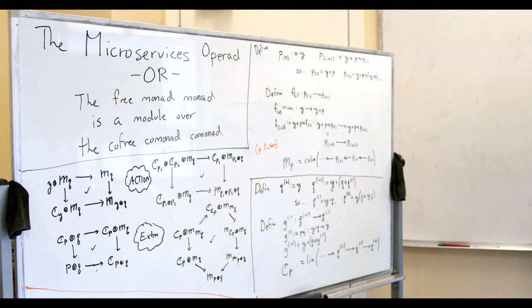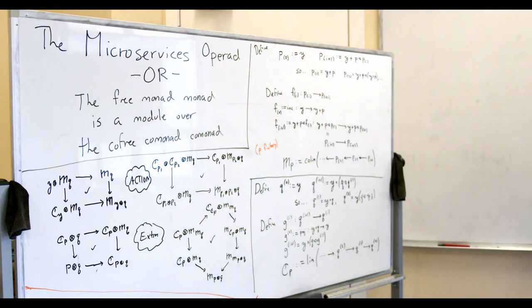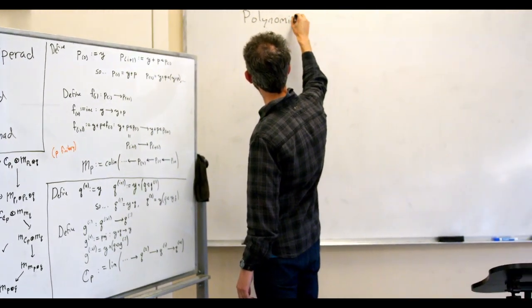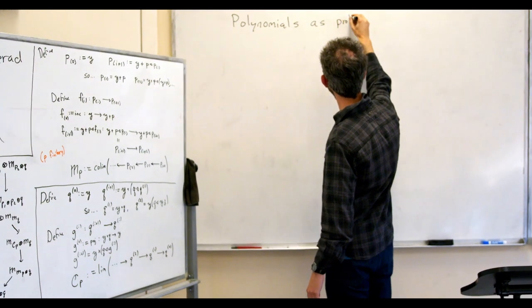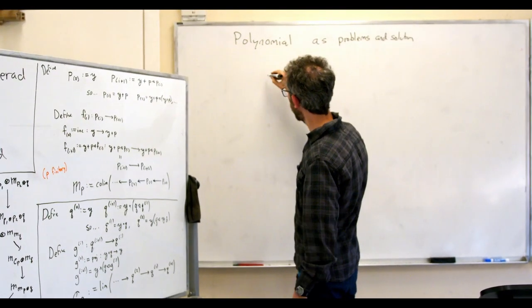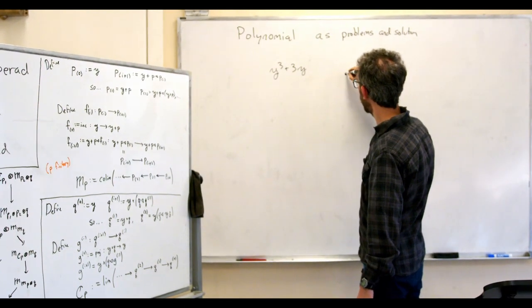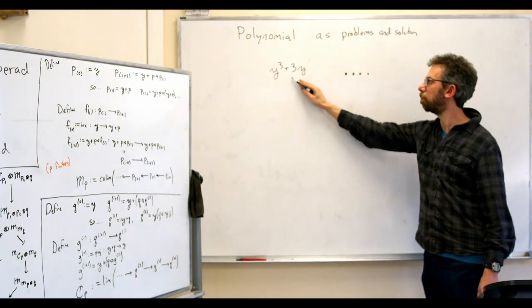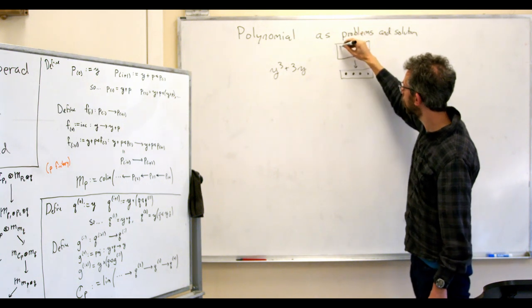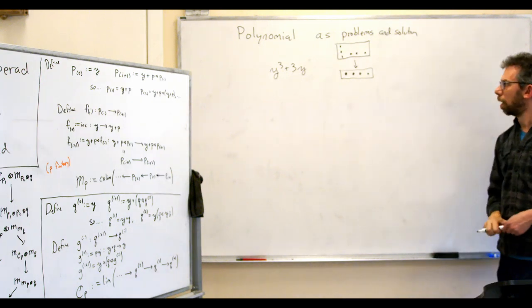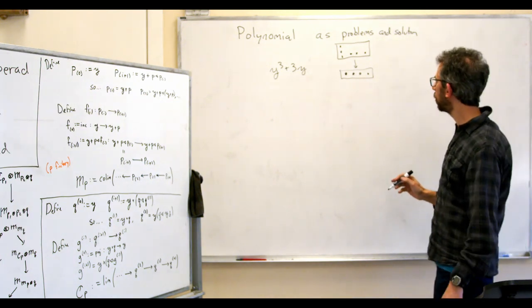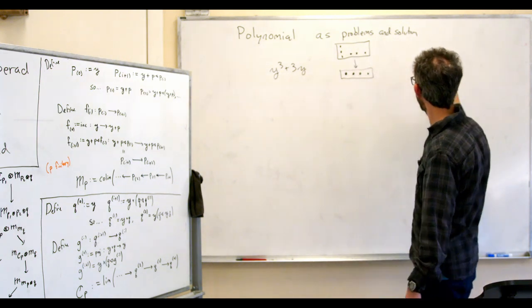The idea for the microservices framing is to look at polynomial functors as problems and solutions. A polynomial like y³ + 3y can be redrawn as a bundle with four dots — applying one gives four — where one position has three dots over it (three solutions) and the other positions each have one dot (one solution each). A map of polynomials from p to another polynomial is one of these structures.